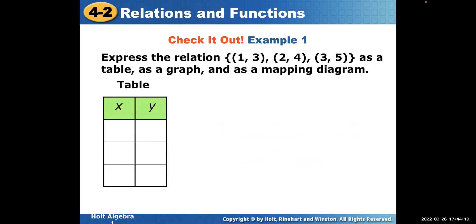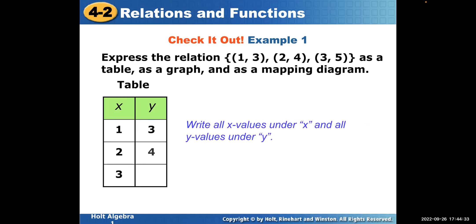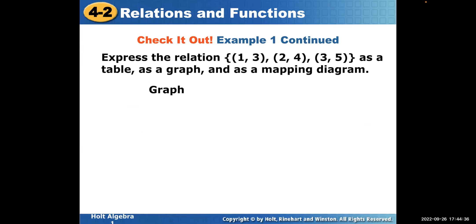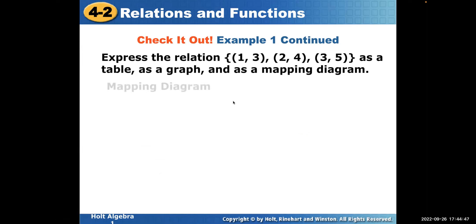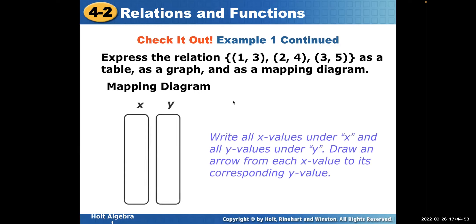Let's do another example: express the relation as a table, graph, and mapping diagram. The first numbers — X values — should be 1, 2, and 3. The Y values are 3, 4, and 5. On the graph, go where X is 1 and Y is 3, then X=2 Y=4, and X=3 Y=5. The mapping diagram looks very similar to the table — 1, 2, 3 on the first side and 3, 4, 5 on the second, with arrows connecting them.